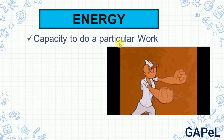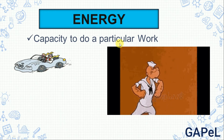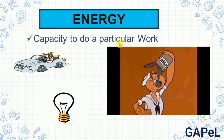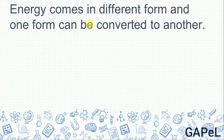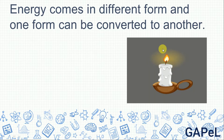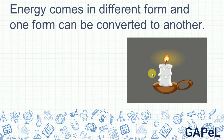For humans, food gives us energy. But for other things — for example, a car needs fuel energy, a bulb needs electricity. So energy comes in different forms and one form can be converted to another. Energy cannot be created or destroyed; we can only convert energy from one form to another. For example, a candle: the wax has chemical energy, and when it burns, chemical energy is converted into light energy and heat energy.